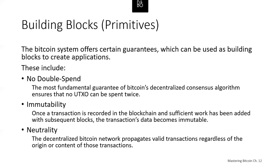These building block primitives include various guarantees which can be used to create applications. For example, no double spend: the most fundamental guarantee of Bitcoin's decentralized consensus algorithm ensures that UTXOs cannot be spent twice. Immutability: once a transaction is recorded in the blockchain and sufficient work has been added with subsequent blocks, the transaction's data becomes immutable. Immutability is underwritten by energy, as rewriting the blockchain requires the expenditure of energy to produce proof of work. The degree of immutability increases with the amount of work committed on top of the block.